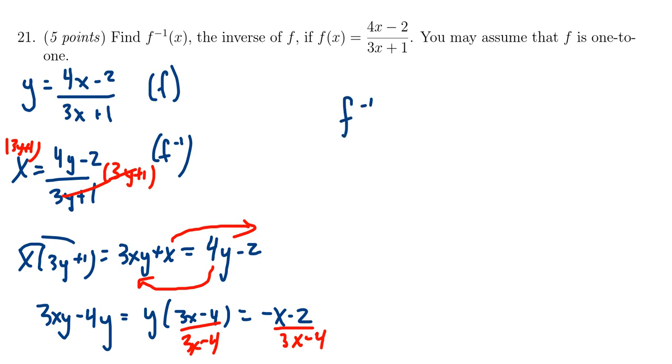Label specifically who f inverse is. Don't leave it up to guessing. You're going to end up with negative x minus 2 over 3x minus 4, like so. And this is then the inverse function that we've just calculated.